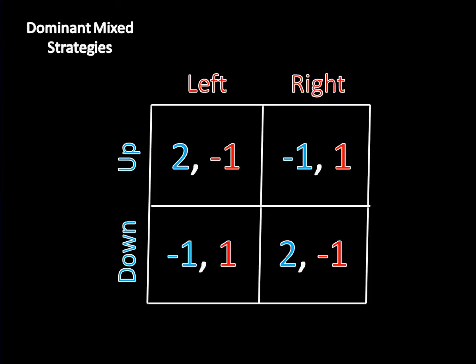As it turns out, the equilibrium for this game is for player 1 to mix 50-50 between up and down, and for player 2 to mix 50-50 between left and right. I'll leave this to you to verify on your own.